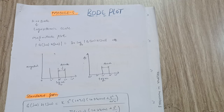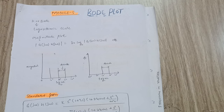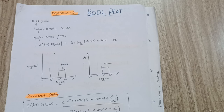Hello everyone, welcome back to my new lecture of control engineering. As we have discussed so far about the root locus and Routh's criteria in order to determine the stability of a system. Today we will discuss about the Bode plot for frequency response systems. We have discussed feedback systems, open loop control systems, and closed loop control systems, so today we will discuss about the stability of frequency response control systems.